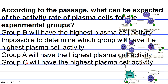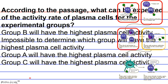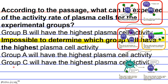Plasma cells are derived from B cells and produce antibodies that help fight infection. There is no evidence that the ZMAP drug activates B cells. Thus, the passage provides no information about the effects of the ZMAP cocktail on B cell activation. The answer is B — impossible to determine.